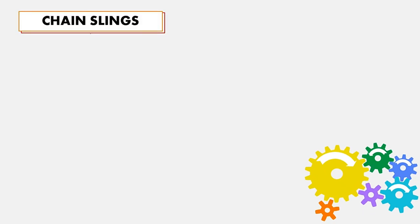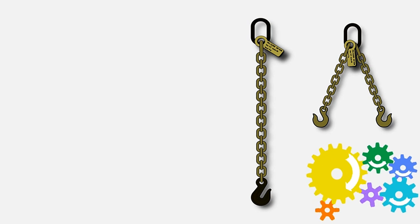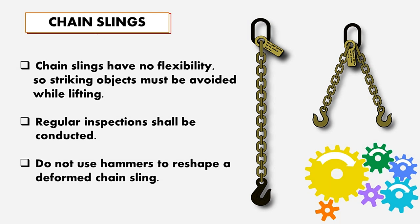Chain slings shall not be used under the following conditions: no ordinary chains shall be used for lifting; the safe working load shall not be exceeded; no knots or boards that shorten the chain length shall be used. Chain slings have no flexibility, so striking objects must be avoided. Regular inspection shall be conducted, and do not use hammers to reshape a deformed chain sling.